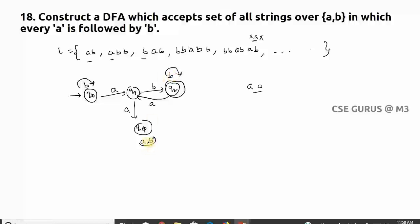So like this you need to solve the question - every 'a' is followed by 'b'. Check out: is it a DFA? q0 to 'a' - yes, q0 to 'b', q1 to 'a' - yes, q1 to 'b' - yes, q2 to 'a' - yes, q2 to 'b' - yes, q_pi - yes.